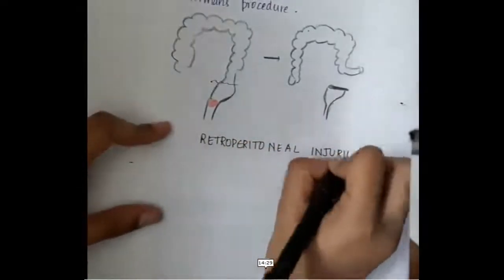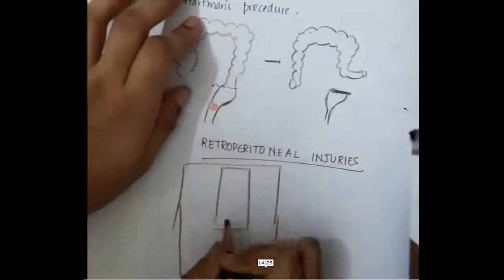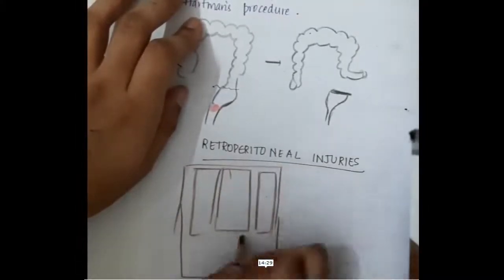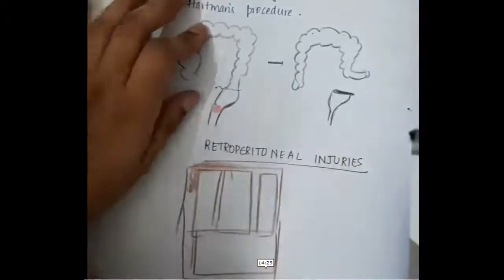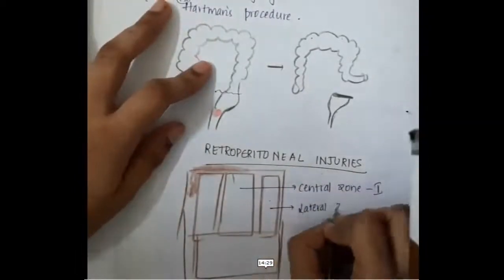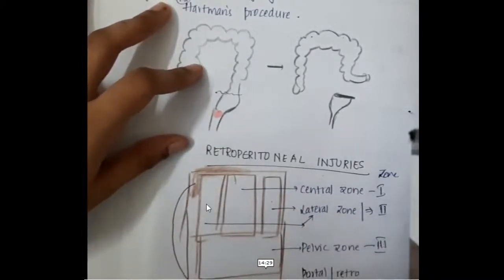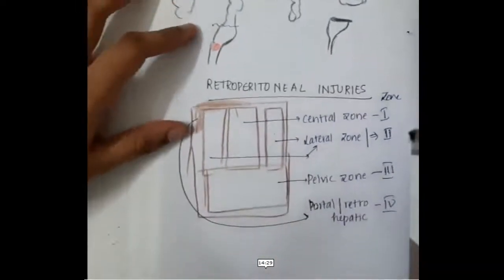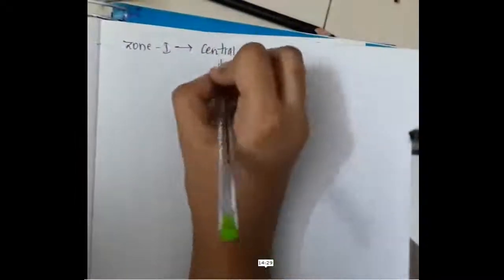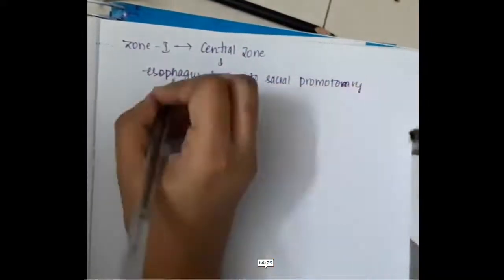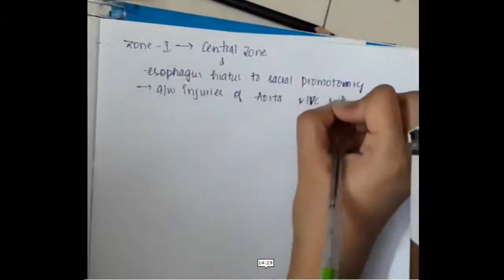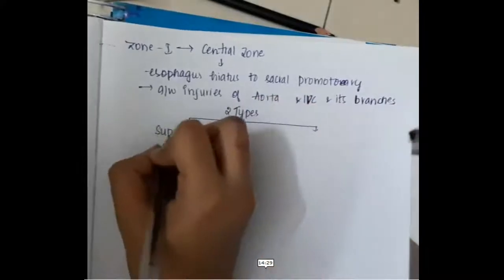In retroperitoneal injury, the retroperitoneum is classified into four zones. Zone 1 is the central zone, which contains the large vessels — the aorta and inferior vena cava. Zone 1 extends from the esophageal hiatus to the sacral promontory and is associated with injuries of major branches of the aorta and inferior vena cava.